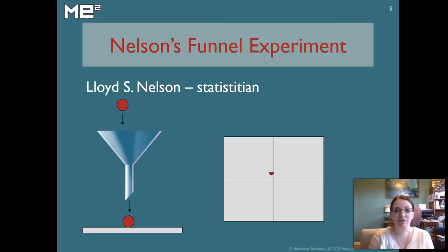Lloyd S. Nelson was a statistician. He died just last year and he came up with an experiment to show managers how they were actually making quality worse every time they changed the system unnecessarily. And what he had them do is they took a funnel like the one that you'll see here on your screen and they dropped a marble into the funnel and let it fall on a piece of paper where it would make a mark. And they were supposed to aim the funnel over a target.